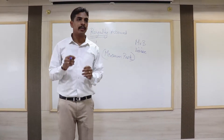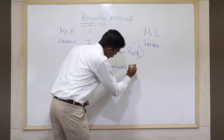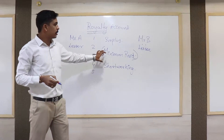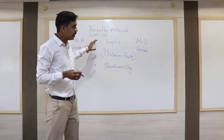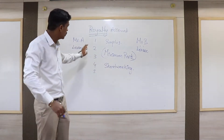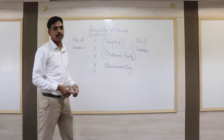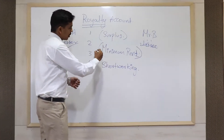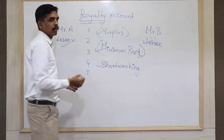The other two terms we need to understand are Short Working and Surplus. Short Working means when production falls below the slab rate fixed by the lessor, that shortfall amount is called Short Workings. When you are able to produce more than the required level — more than the Minimum Rent amount — that excess value is called Surplus. So we have now understood: Lessor, Lessee, Minimum Rent, Short Working, Royalty, and Surplus.